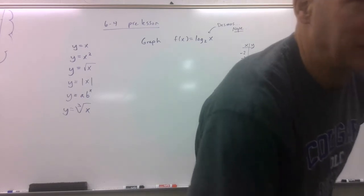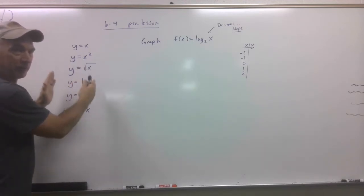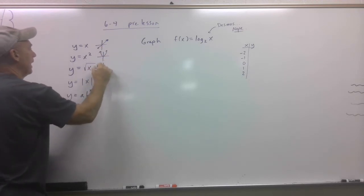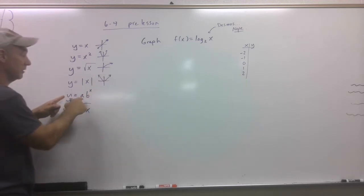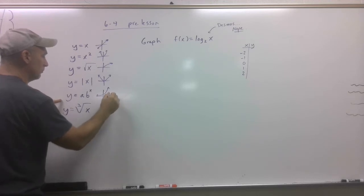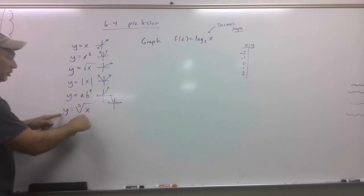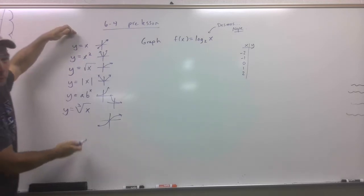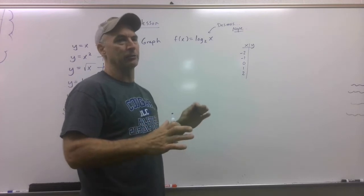All right, next chunk — this is going to be a big pre-lesson. You should be somewhat familiar with parent functions: y = x looks like a line; y = x² looks like a parabola; square root of x; absolute value; exponential growth and exponential decay. This is probably new to you, but you need it in your toolbox: the cube root of x, which kind of looks like that. The goal here is review, so that when we start graphing these you'll have a memory of what they look like.